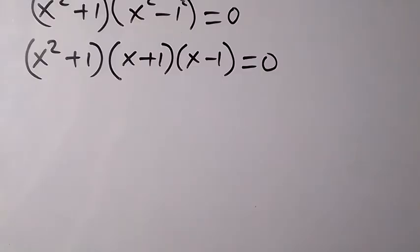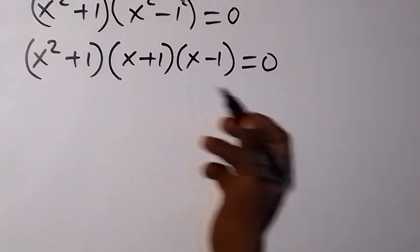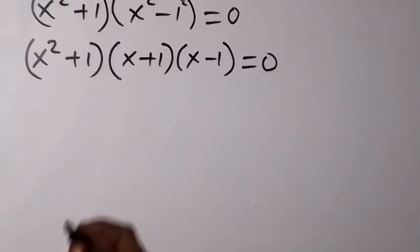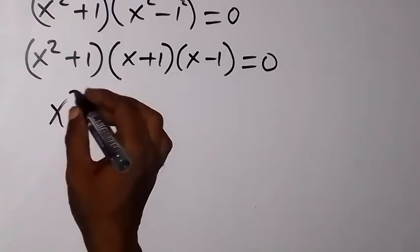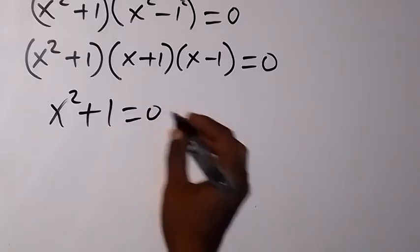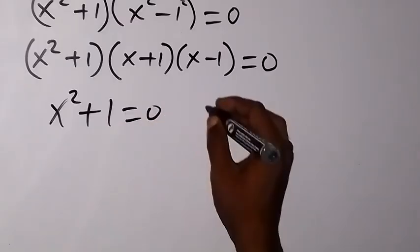What we have here on the left-hand side is three terms multiplying and giving us 0. So either of them could be 0. That means we have x square plus 1 equals 0. That's the first case here.